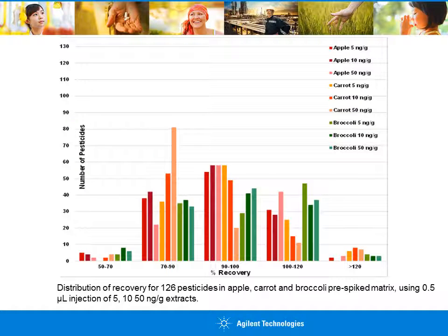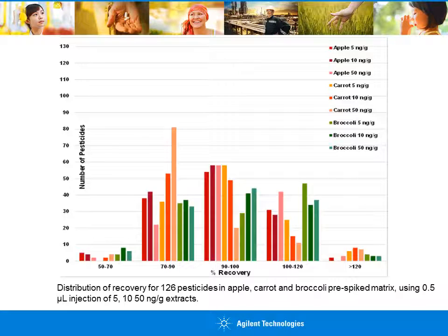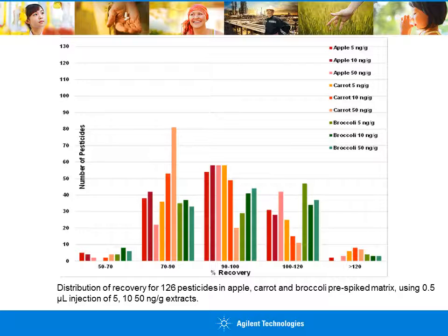Recovery was evaluated by spiking pesticide standards in apple, carrot, and broccoli at levels of 5, 10, and 50 nanograms per gram. These QC samples were quantitated against the matrix spike calibration curve. The analysis was performed in replicates of 3 at each level. The distribution of recovery for the pre-spiked matrices is shown in the slide. The percentage of pesticides falling within the acceptable mean recovery range of 70 to 120% averaged 95% in apple and 96% in broccoli. A handful of pesticides in carrot and broccoli were slightly outside the 70–120% range but were accepted based on RSDs being substantially lower than 20%.